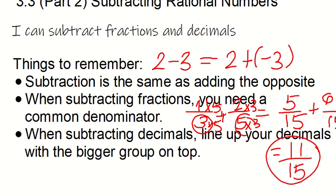When you're subtracting decimals, line up your decimals with the bigger group on top. This is where we're seeing a lot of mistakes being made. If I have 2.3 minus 5.7, first I need to add the opposite. I know it's different signs, so I need to subtract. A lot of you are writing 2.3 on the top and taking away 5.7. You need to put your bigger group on the top. So 5.7 minus 2.3 and set up your problem that way. Do not put your 2.3 on top. Your bigger group goes on top.